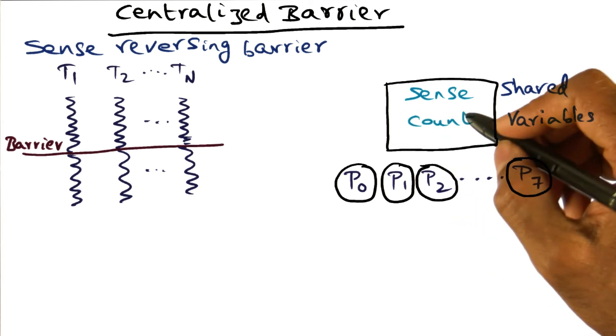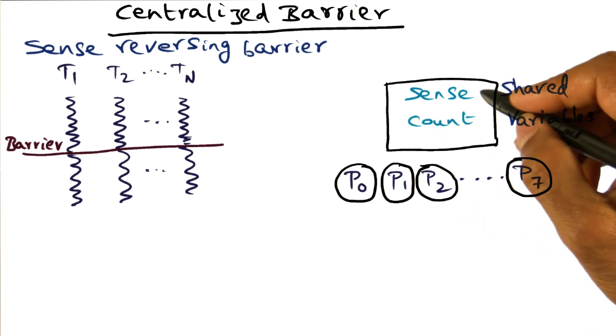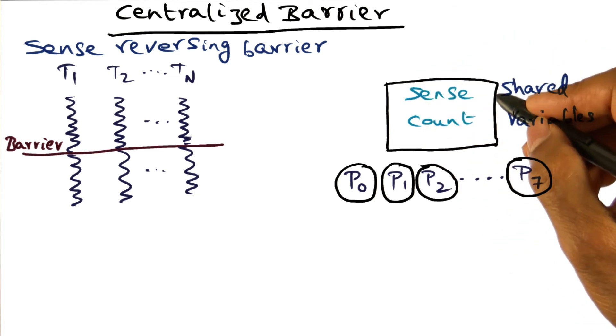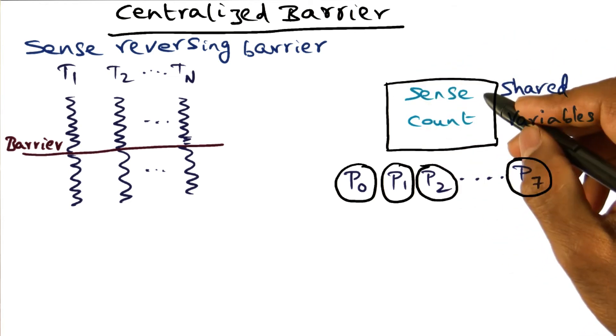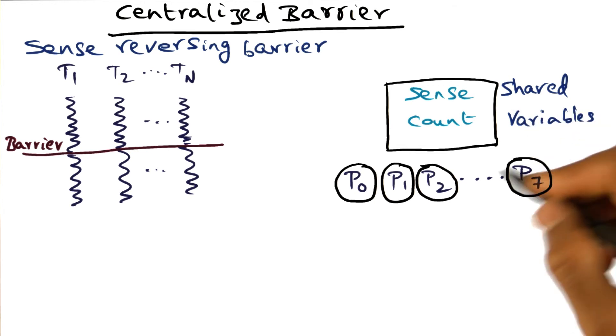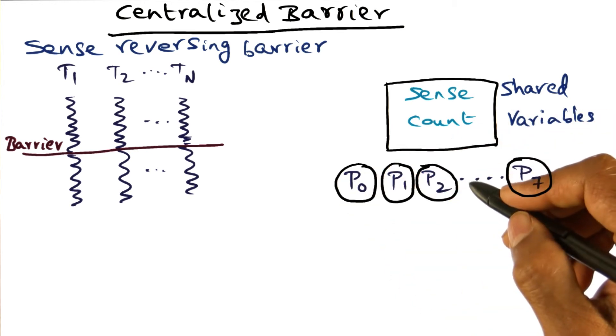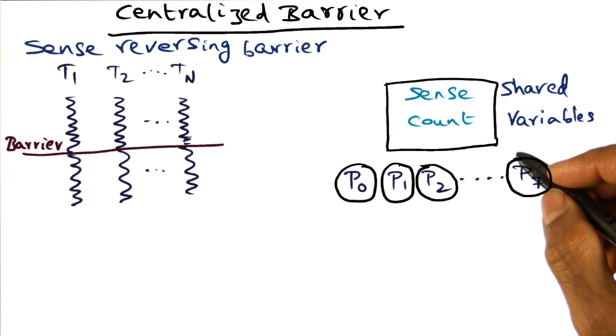In addition to the count, there is a sense variable. In the shared variables that we have, we included a new variable called sense variable that's also shared by all the processes that want to accomplish a barrier synchronization.